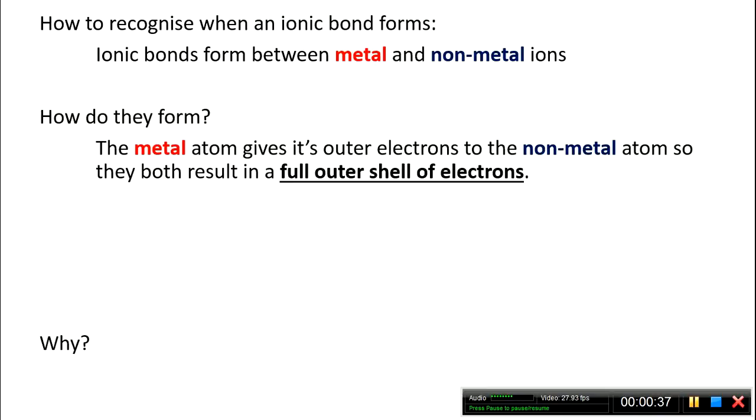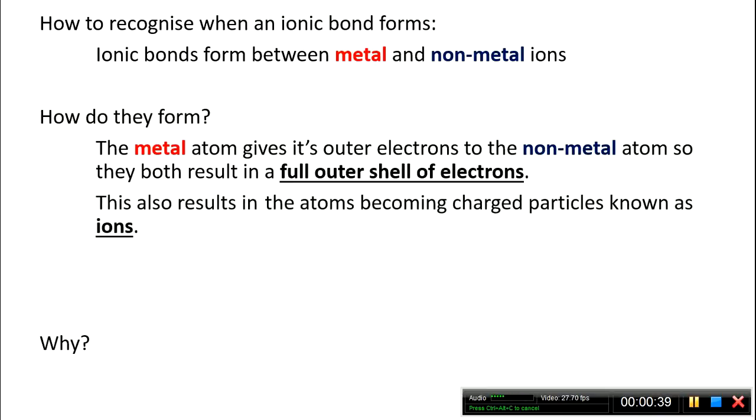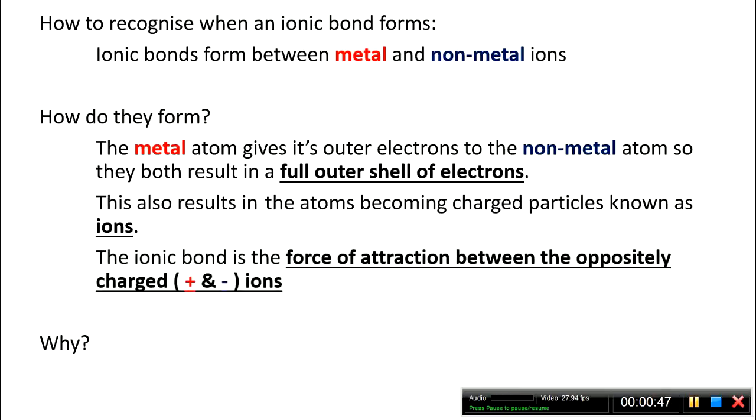So they both result in a full outer shell of electrons. It also results in the atoms becoming charged particles known as ions, hence ionic bonding. The ionic bond is the force of attraction between the oppositely charged, so the positive and the negative ions. It's very important that you write this as a definition. If you're asked what an ionic bond is, it's not the giving and taking of electrons. That's how it's formed. The actual bond is the force of attraction between the oppositely charged ions.